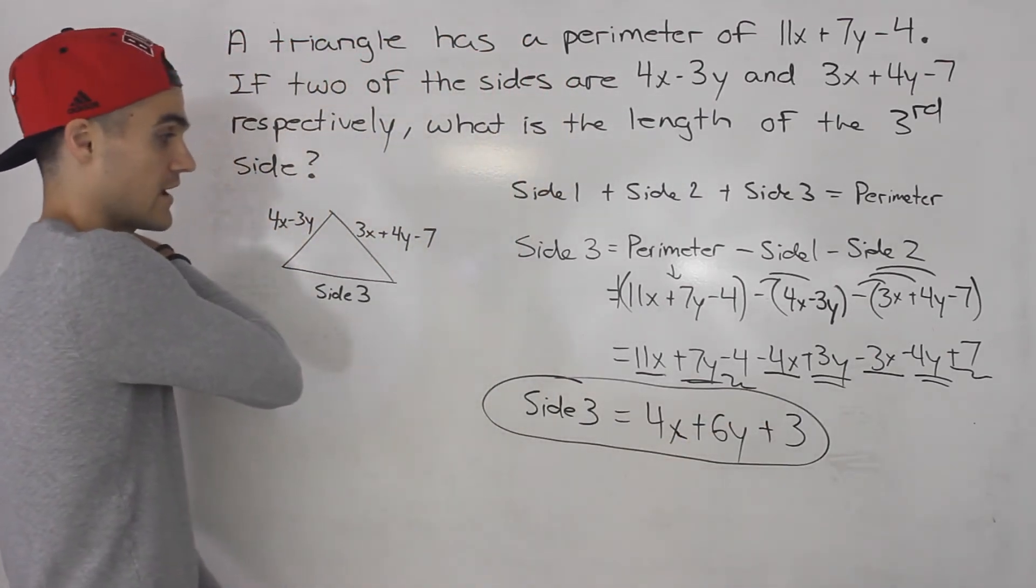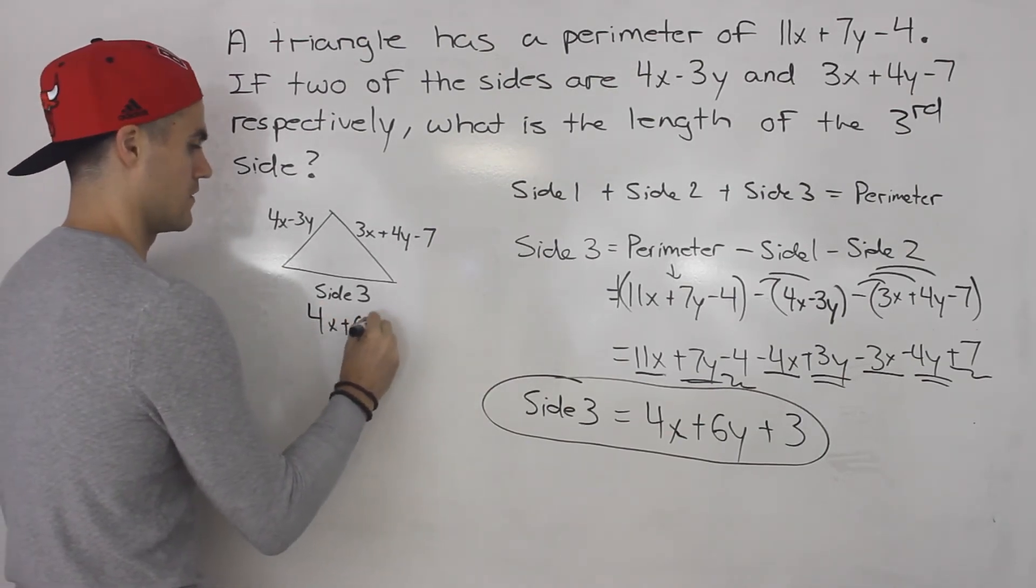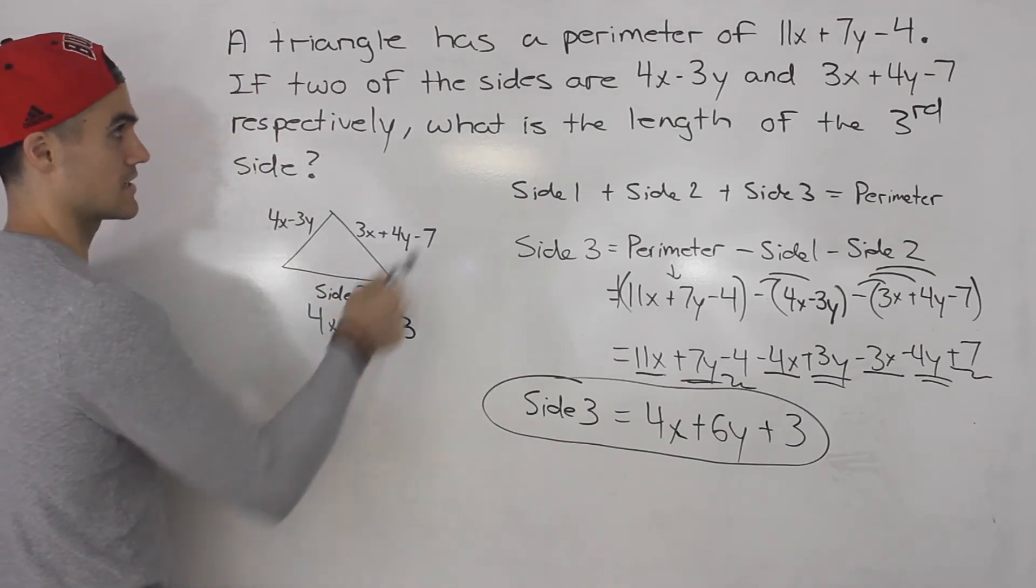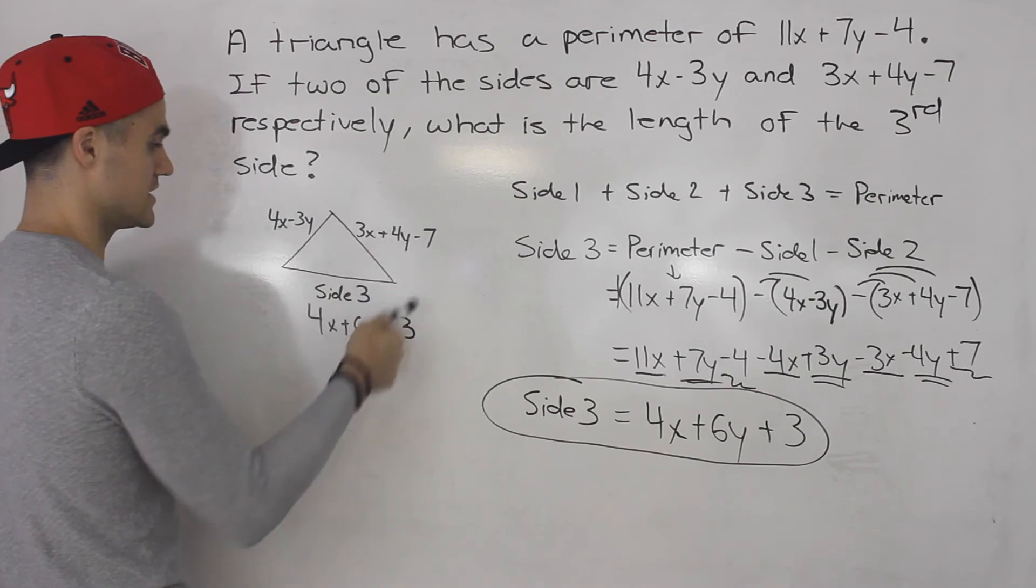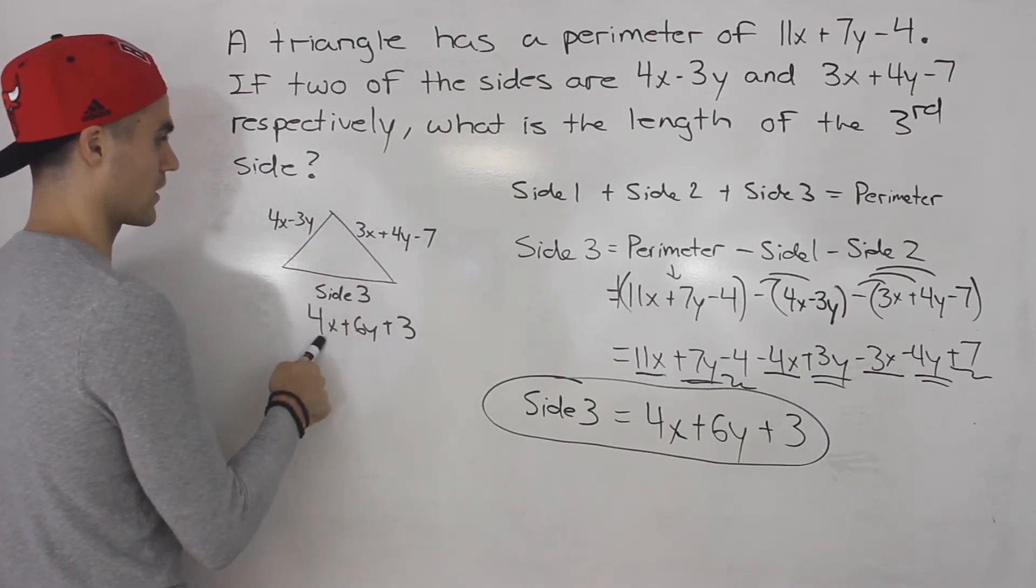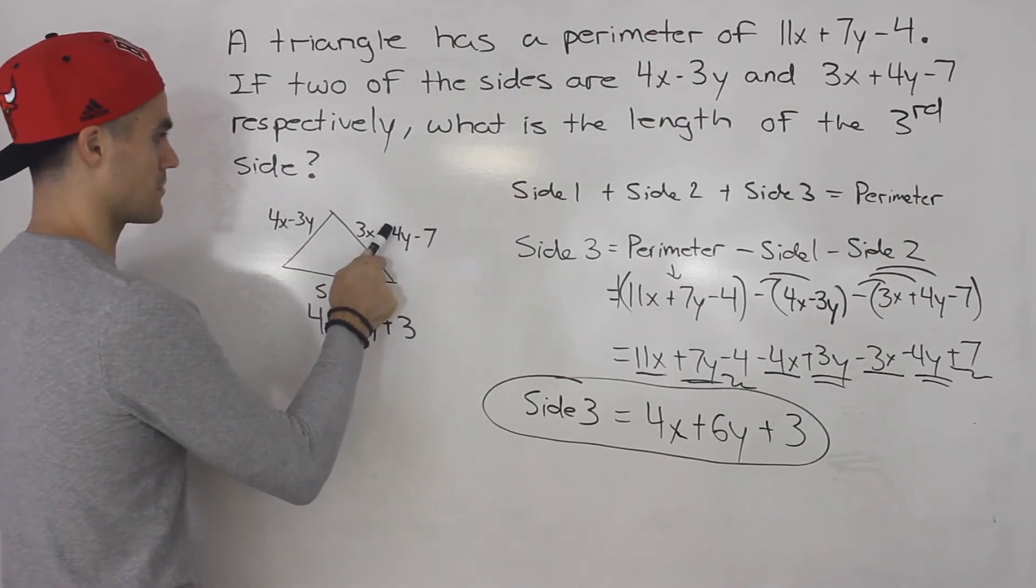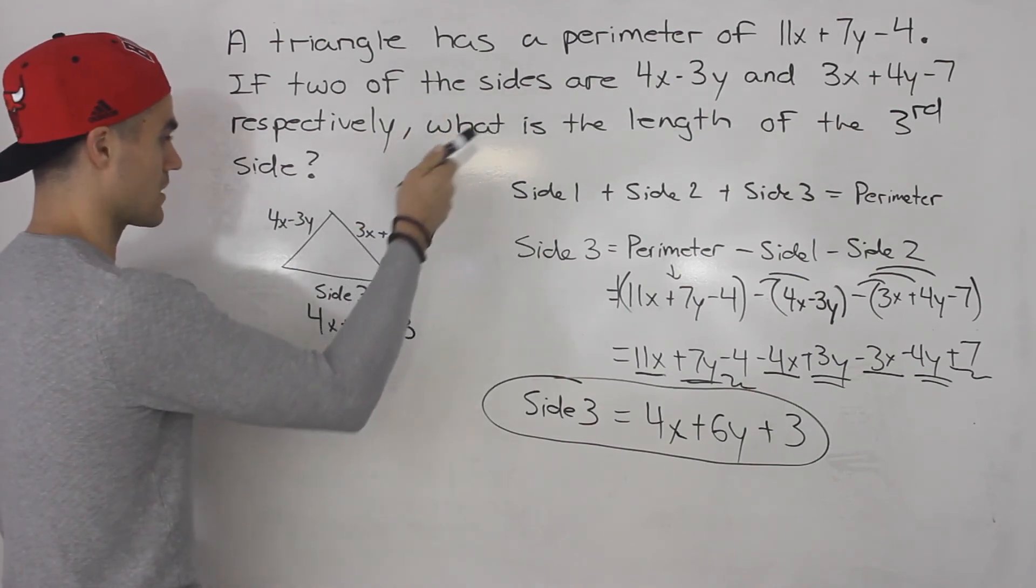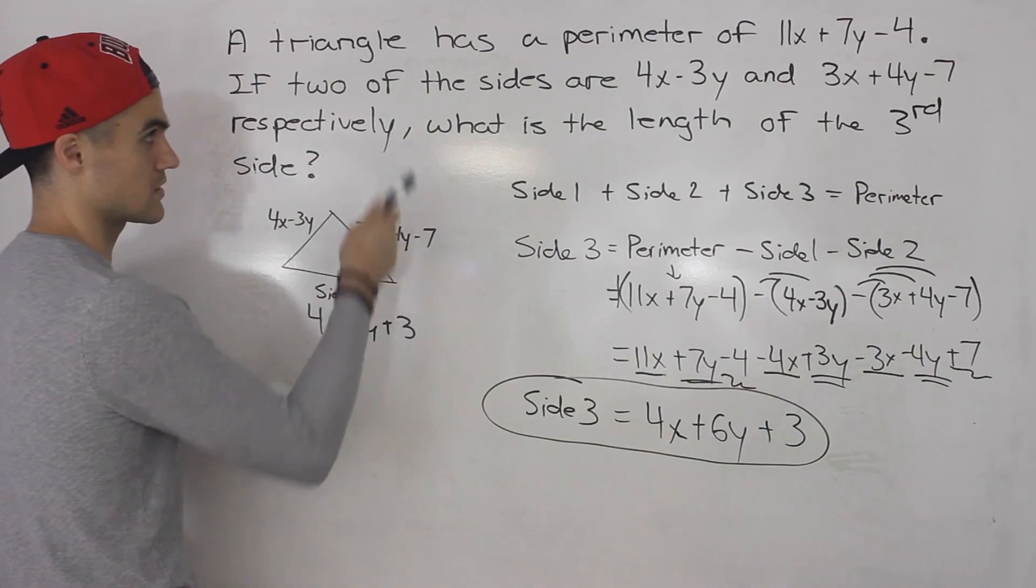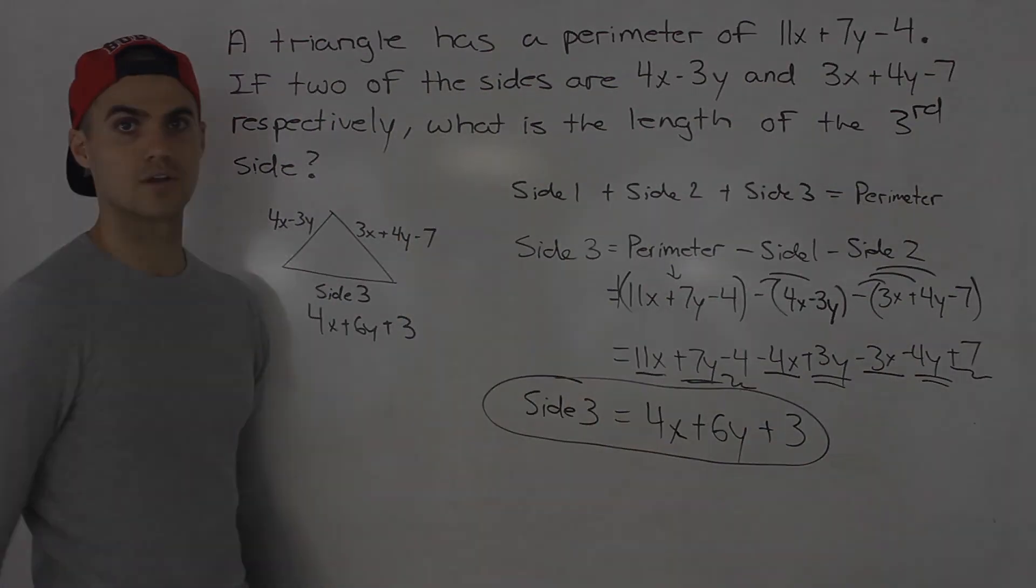And you can actually check your answer. So you can take this side 3, put it here. And then what you can do is you could add up these three sides and make sure you get that expression for the perimeter. And if you did that you would. So 4x plus 3x plus 4x gives us 11x. Minus 3y plus 4y gives us positive 1y plus 6y gives us 7y. And then minus 7 plus 3 gives us minus 4. So that there is the expression for the third side.